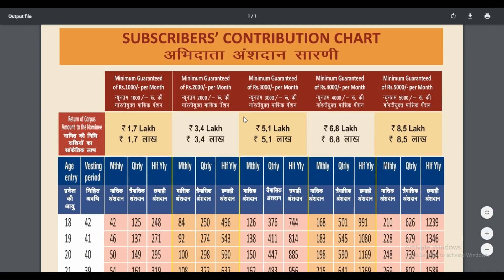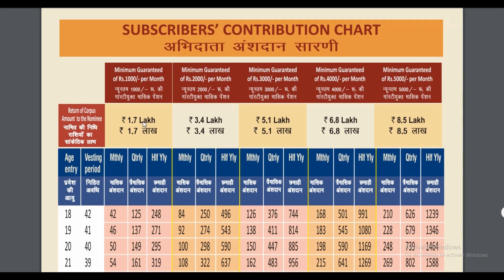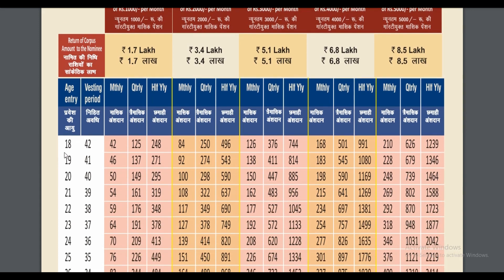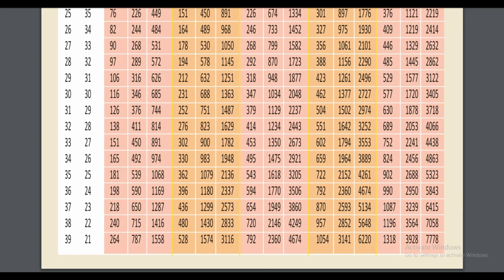Here is the complete chart for the minimum guaranteed pension. For example, for Rs 1.7 lakh corpus: at age 18, the contribution period is 42 years, with a monthly contribution of Rs 42, quarterly Rs 125, and half-yearly Rs 248. At age 19, the monthly contribution is Rs 46, with other values adjusted accordingly. I will leave the chart link also in the description box.